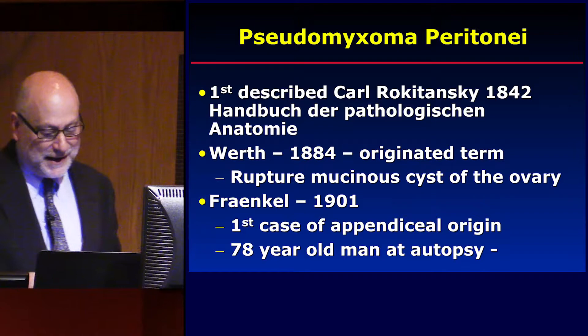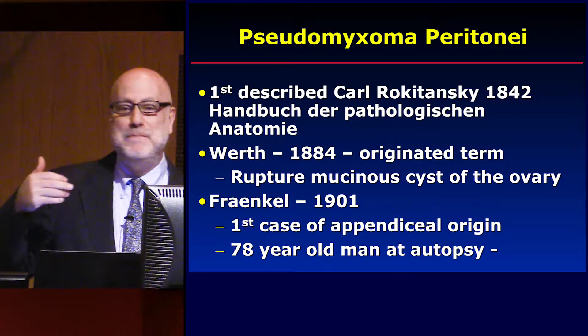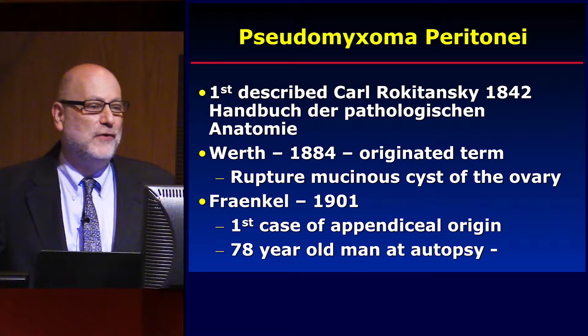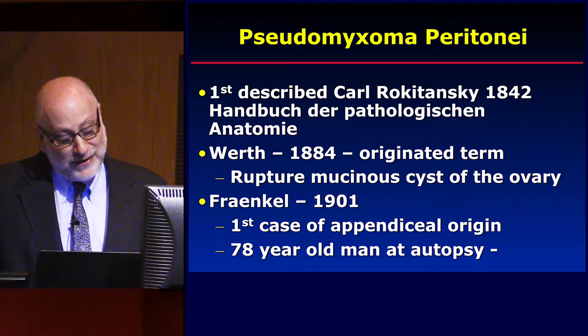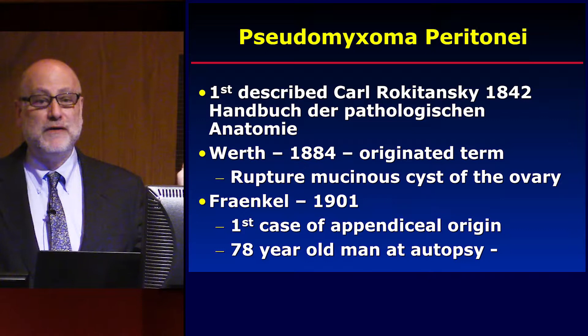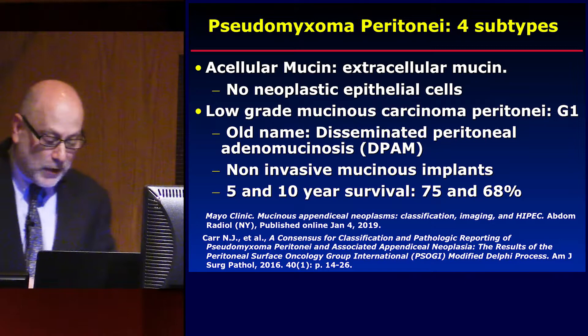Dr. Esquivel and I have the exact same epidemiology slide. I gave you the name of the textbook where Rokitansky first described this — Rokitansky had many other things named after him: the Rokitansky-Aschoff sinuses are part of gallbladder adenomyomatosis, and in the mature cystic teratoma of the ovary it's called the Rokitansky plug, which is the non-fatty solid portion. Interestingly, the first reported case by Werth was not even from the appendix — it was from the ovary. Frankel did describe the first appendiceal mucinous tumor that resulted in mucinous ascites.